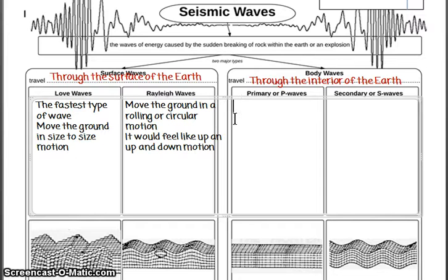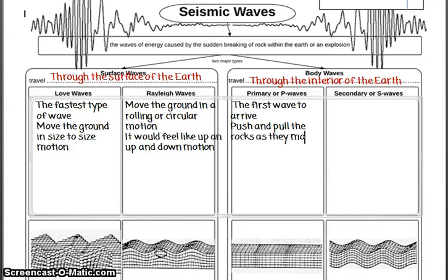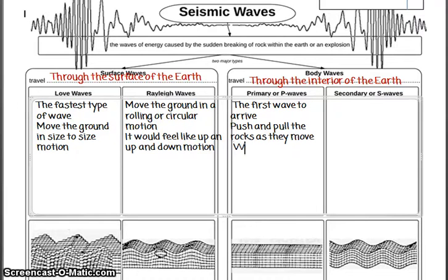Primary waves are the first wave to arrive when you sense an earthquake. They move through the solid rock of the earth, pushing and pulling the rocks as they move. This is typically what animals in different places pick up on and get concerned about — most people are not as perceptive. Primary waves are also the weaker earthquake wave.